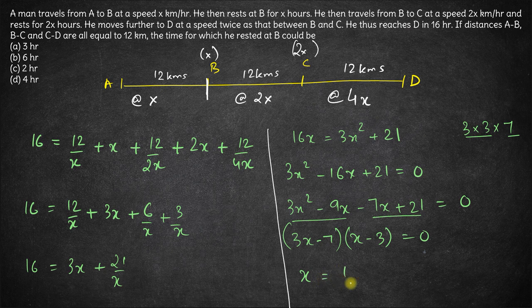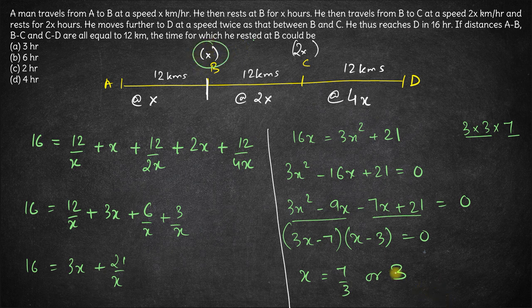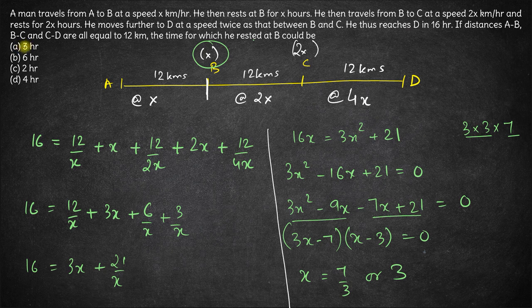Hence x is either 7 by 3 or 3. Hence here what we need to calculate is the time rested at B which is x. So x is either 3 or 7 by 3. In the options we only have option 3, 7 by 3 is not there. Hence the correct answer here is option A. Thank you.